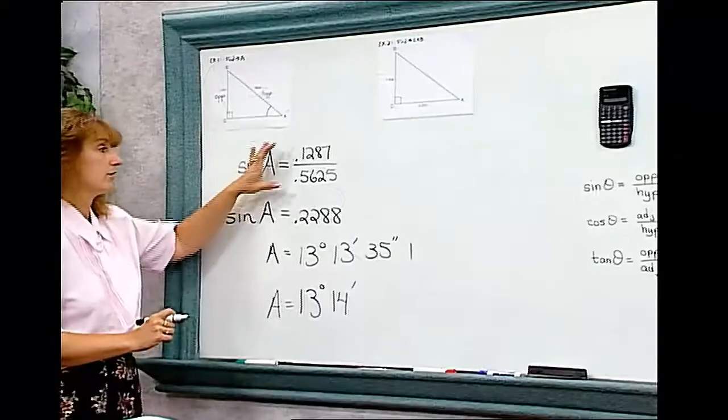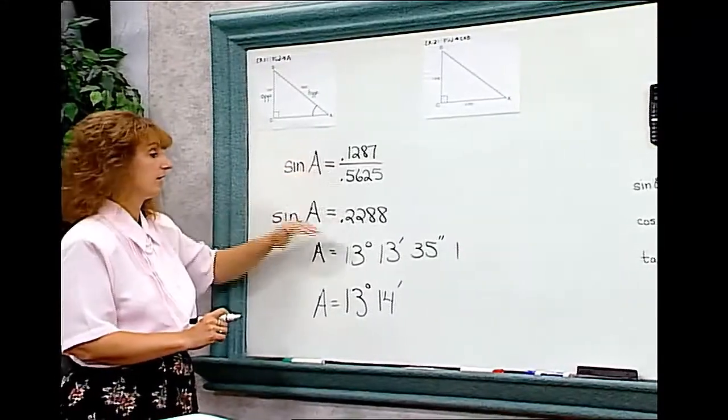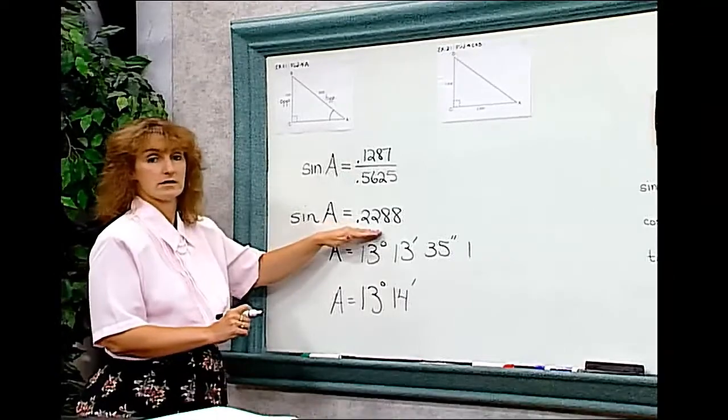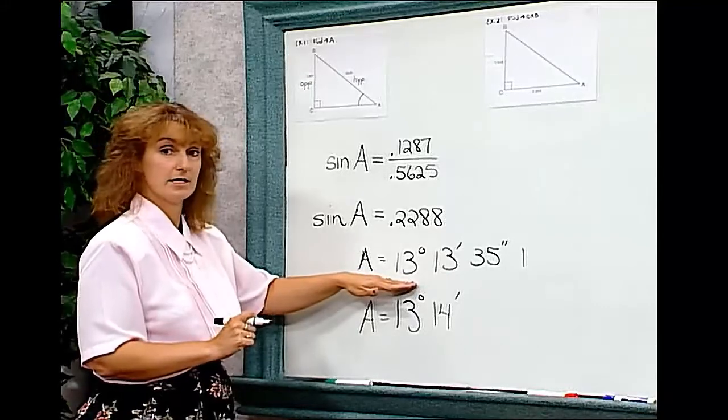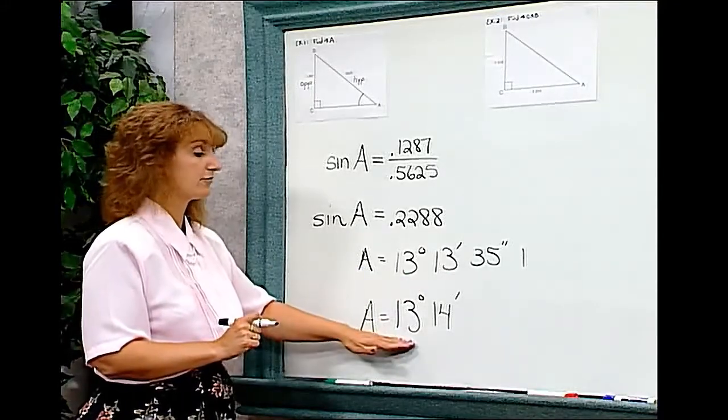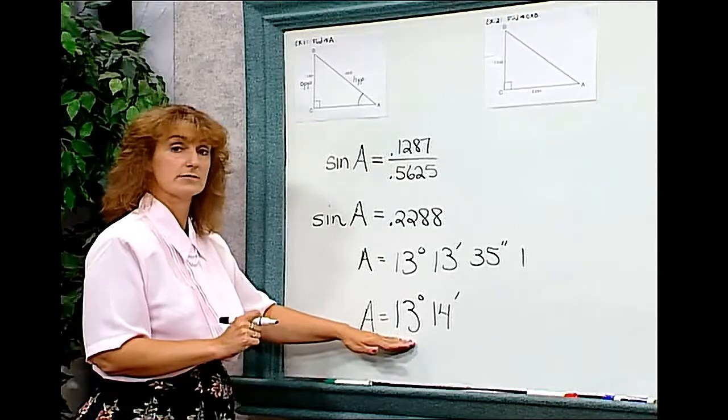So remember, you're going to divide. You're going to find the arc sine by hitting the second and then the sine button. Then you're going to change it to degrees, minutes, and seconds, and round. In this case, we're rounding to the nearest minute.